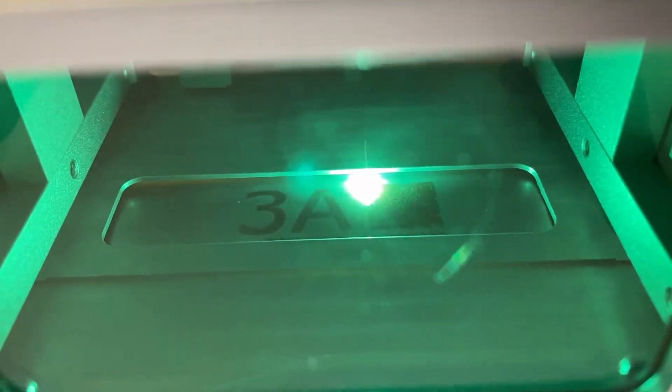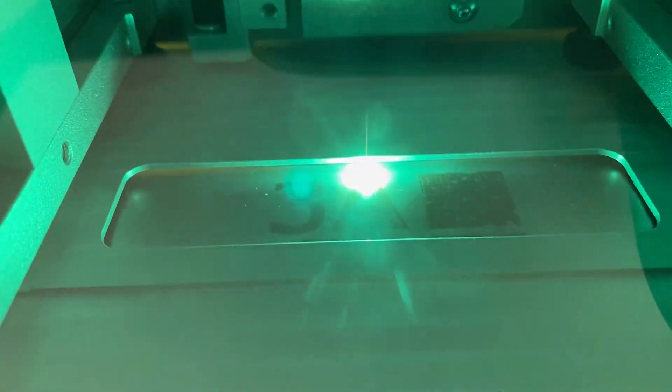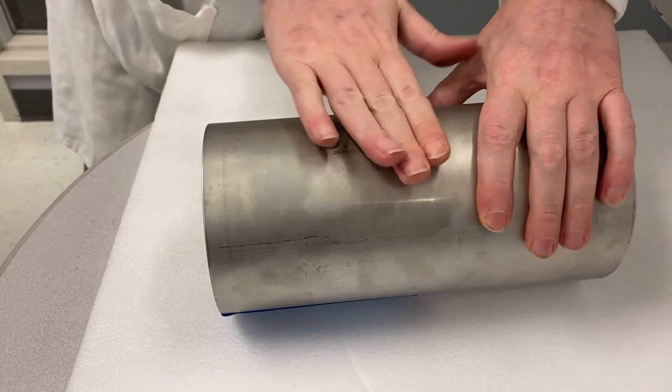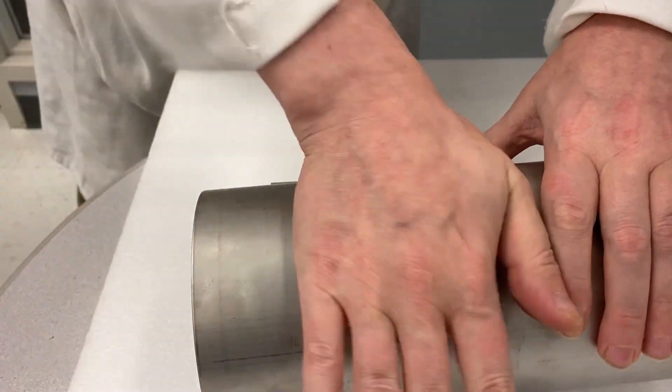Second, the Markstar Pro. This unit's longer emitter chamber allows for a maximum 4-inch by 4-inch marking area.